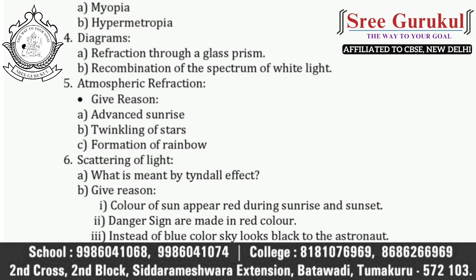Next: diagrams. In this chapter, you are having two diagrams. First is refraction through a glass prism. Second is recombination of the spectrum of white light — this second question is most frequently asked in your board examination. Next concept: atmospheric refraction. Based on this concept, you can expect give reasoning questions — first, advanced sunrise; second, twinkling of stars; third, formation of rainbow. Next concept: scattering of light. In this concept, you can expect the question — what is meant by Tyndall effect? Again, they can ask give reasoning questions: color of sun appears red during sunrise and sunset; danger signs are made in red color; instead of blue color, sky looks black to the astronaut.